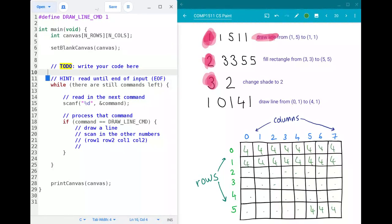You then have your code and so your code is going to loop on continuously while there are still more commands to read. You're then going to want to read in the command so this number we've got over here showing what the command is and then process that command so based on what the command is for example if it's this this one this draw a line command then draw a line scan the numbers to draw a line loop through your array draw the line if it's a two fill a rectangle if it's a three change a shade if it's a four copy and paste and so on.